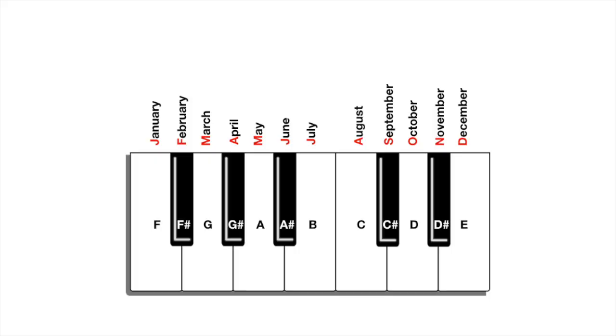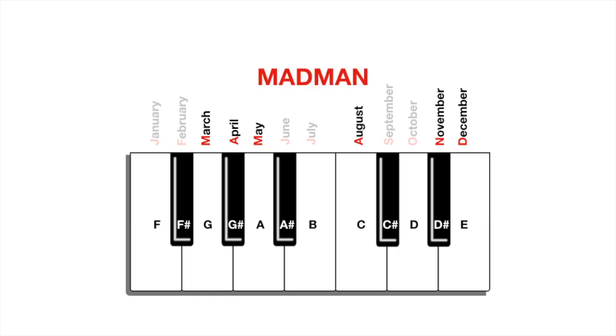Now that's really cool, but it turns out there are even more patterns embedded within this system that you can discern a deeper meaning from. First, consider just the first letter of each month listed in sequence — if you take a subset of those letters you can rearrange them to spell out the word MADMAN. And if you then consider the subset of those letters which fall on the white keys, you can rearrange them to spell out the word MDMA.